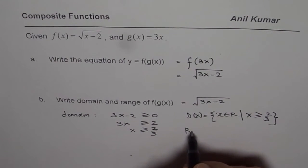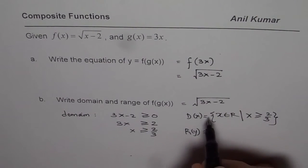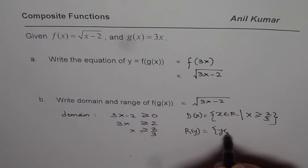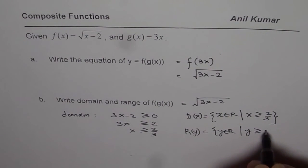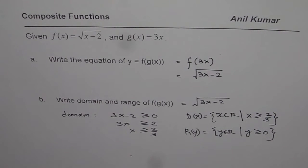Now as far as the range is concerned, we know for a square root function, the range is always greater than or equal to 0. So y belongs to real numbers where y is greater than or equal to 0. That becomes the range of the given function. I hope that helps. Thank you and all the best.